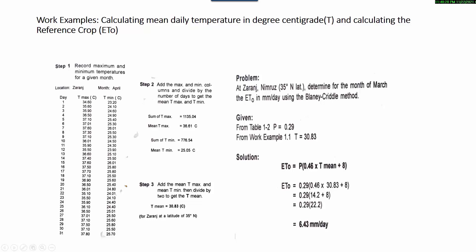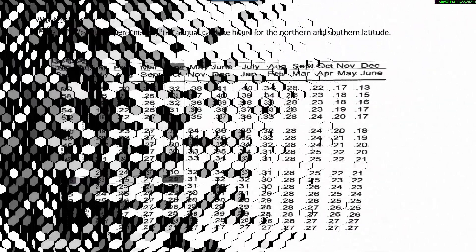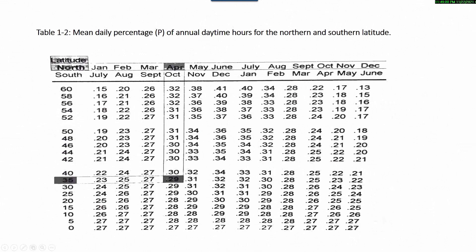So the problem could be solved like this: At Zaranj, Nimroz, 35 degrees northern latitude, we use the Blaney-Criddle method for the month of April to find the evapotranspiration in millimeter per day. Given: p equals 0.29 from Table 1-2 for April and northern latitude 35.